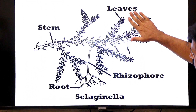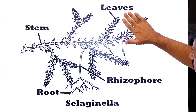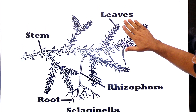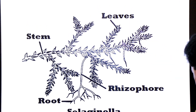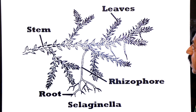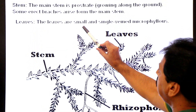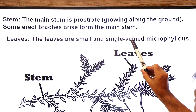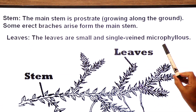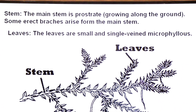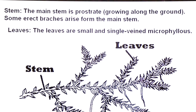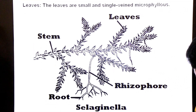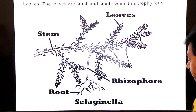Now let's come to their leaves. Their leaves are single-veined leaves, which we call microphylls. The leaves are small and single-veined, known as microphylls.